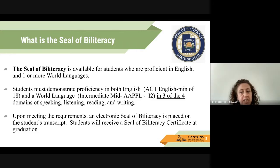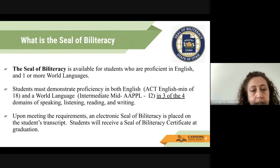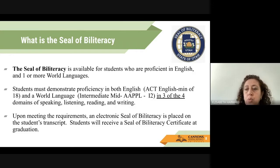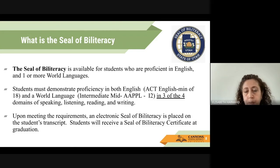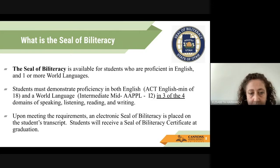Students must demonstrate proficiency in both English — they can use their ACT English score — and in the world language. For world language proficiency, they need to reach Intermediate Mid on the AAPPL measure, which is an I2. When they test with AAPPL, students test in all four domains: speaking, listening, reading, and writing, but we will take three of the four in order to qualify. Once students have met requirements for both English and the world language, an electronic Seal of Biliteracy is placed on the student's transcript, and students receive a certificate at graduation.